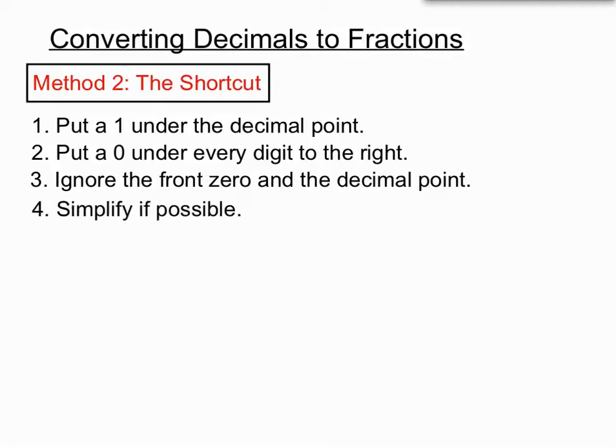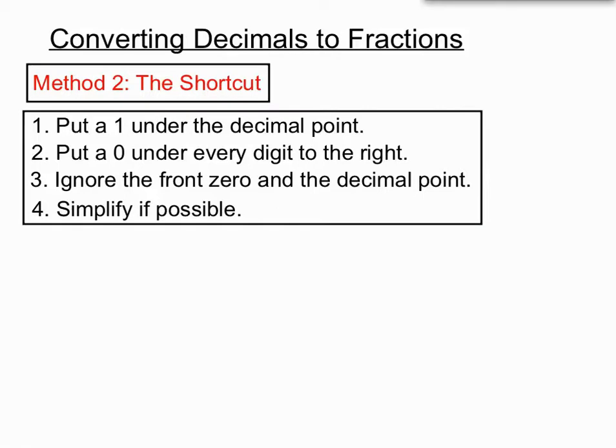That creates our bottom number. We then do a pretty swift thing by ignoring the front 0 and ignoring the decimal point, and then we also have to simplify. Let's see an example and I'm hoping it'll all be clear for you. If we're asked to write 0.61 as a simple fraction, step one is to put a 1 under the decimal point, and then we'll put a 0 under every other digit off to the right.